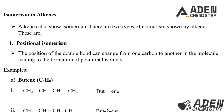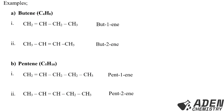Examples — we want to do positional isomerism for butene, pentene, and hexene. Remember, isomers are compounds with the same molecular formula but different structural formula. The molecular formula for butene is C4H8. The first isomer has the double bond on the first carbon — named but-1-ene. The next one, we move the double bond to the second carbon, giving but-2-ene. So butene has only two positional isomers: but-1-ene and but-2-ene.